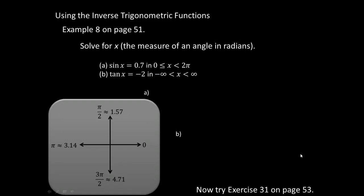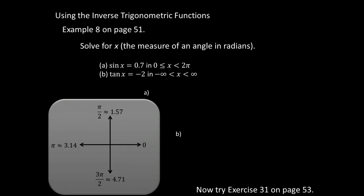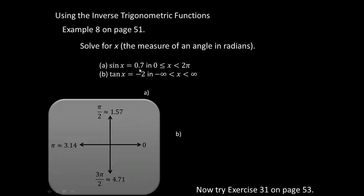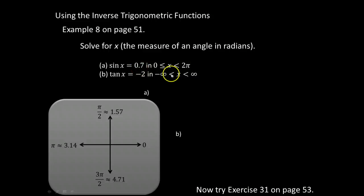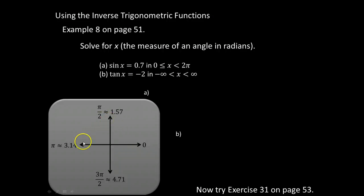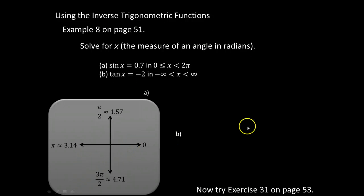Using the inverse trig functions - this is example 8 on page 51. We're looking to solve each of these for x, and we're going to find the measure of the angle in radians. So our first equation for part A: sin(x) = 0.7, and we're looking in the interval of 0 to 2π. So anywhere, one trip all the way around the coordinate plane.